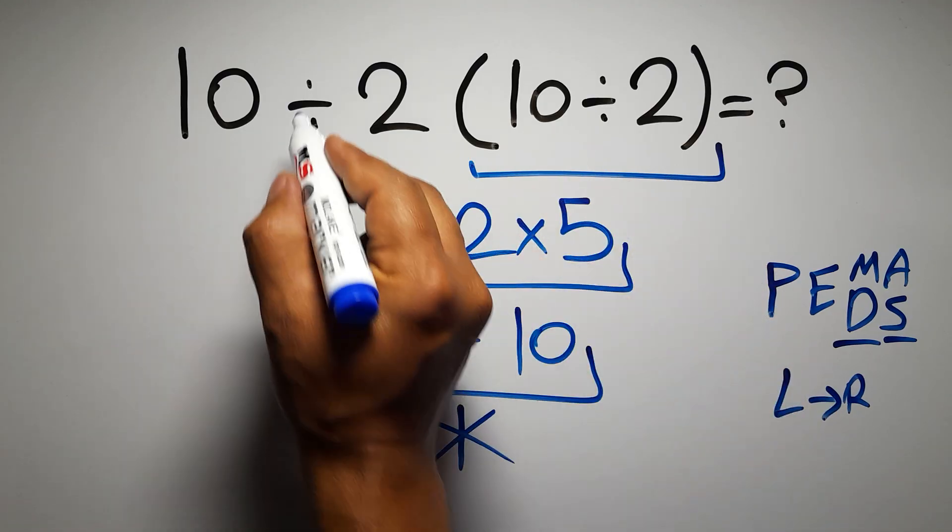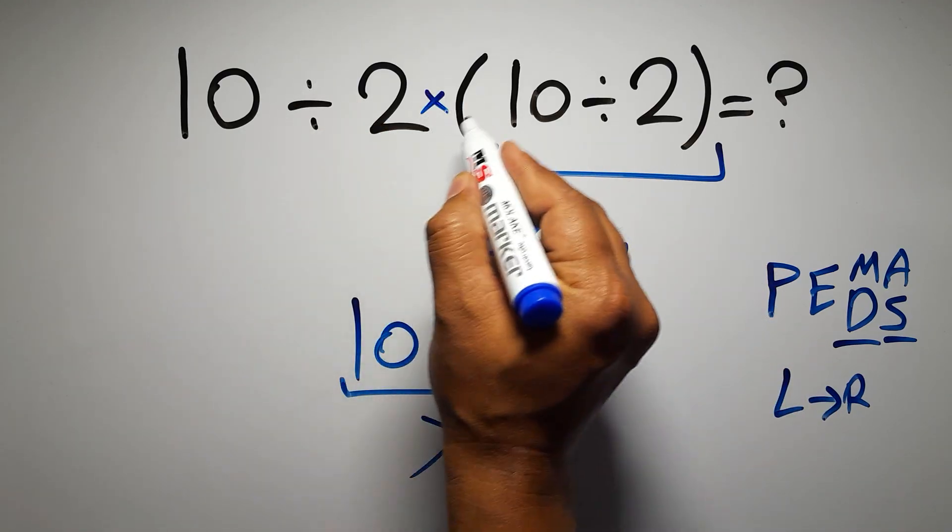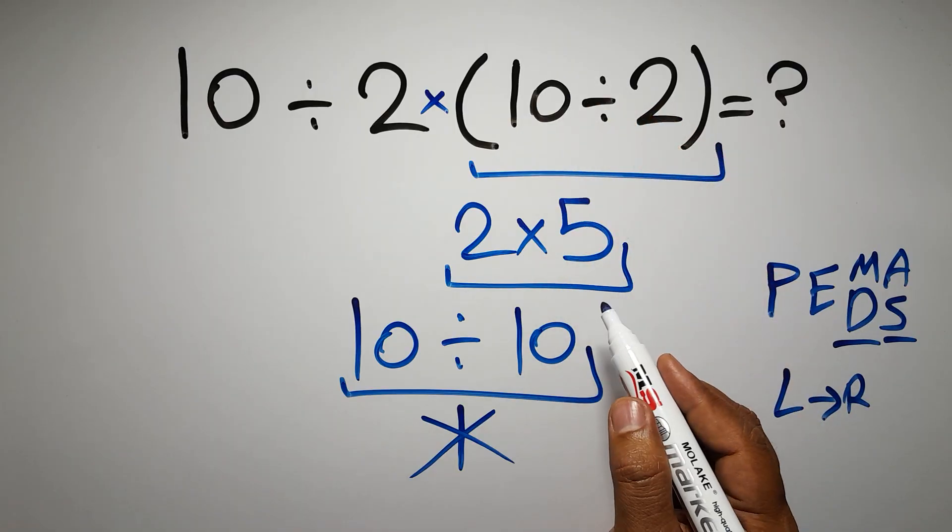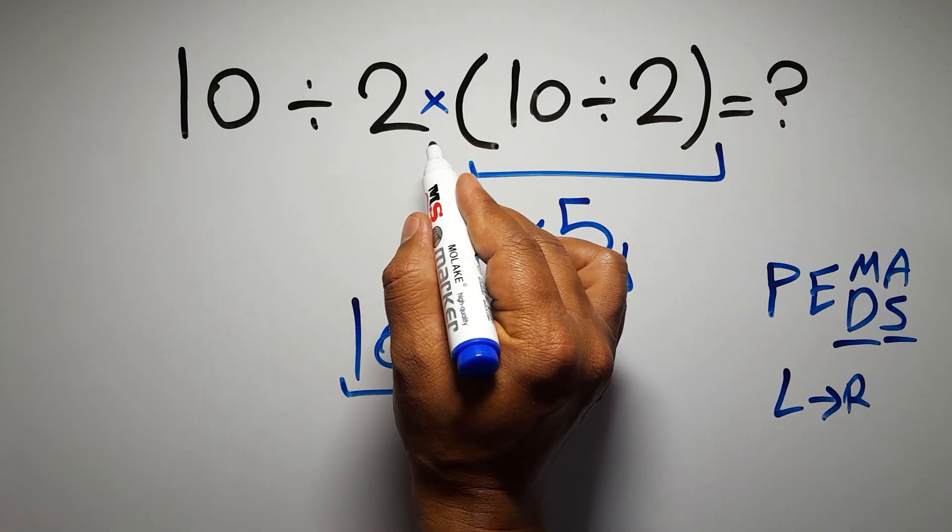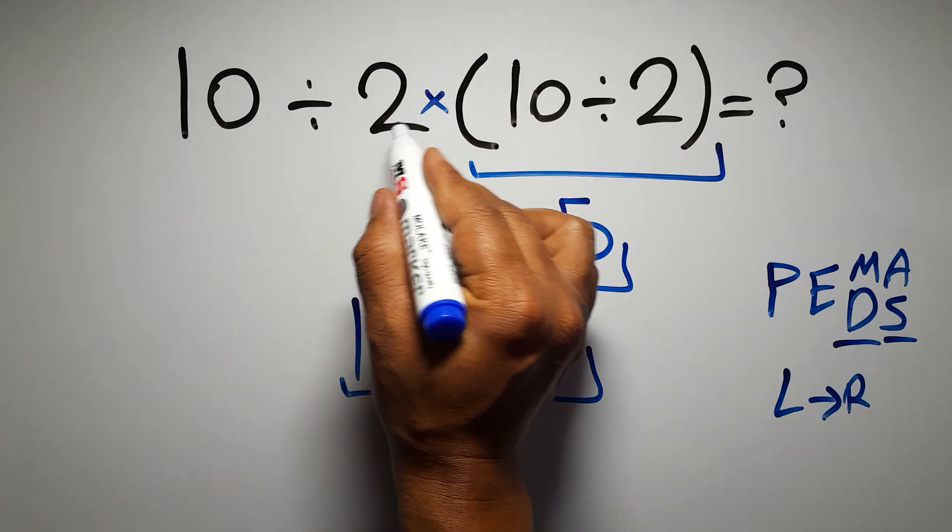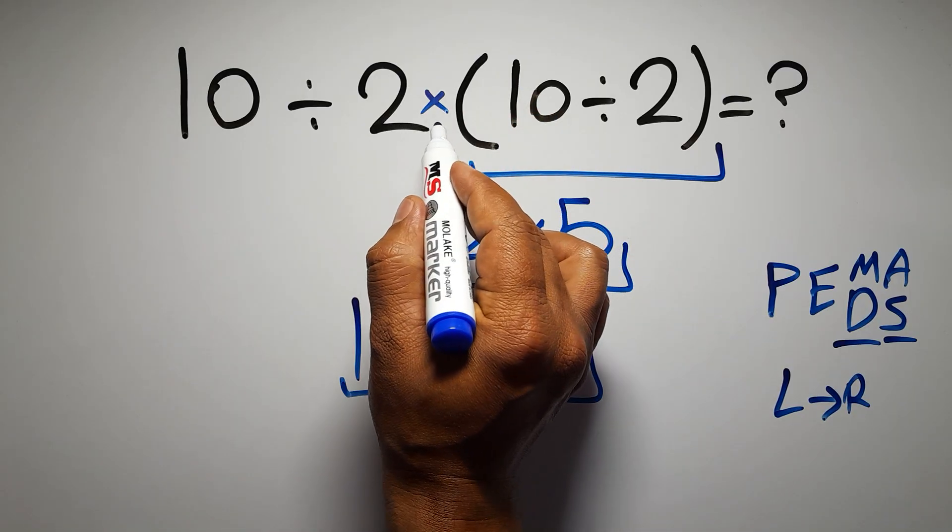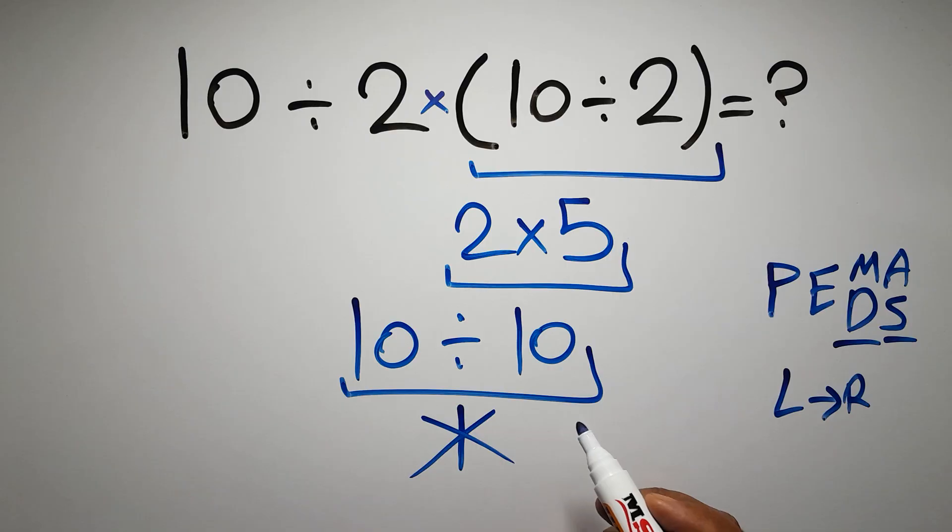In this expression we have one division, one multiplication, and one parentheses. Inside these parentheses we have one division. Here we have a multiplication, because in mathematics when a number is placed next to parentheses, it means multiplication, and we usually don't write the multiplication sign for brevity.